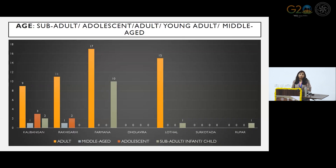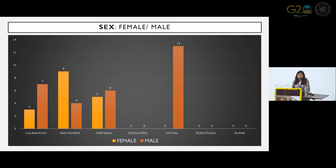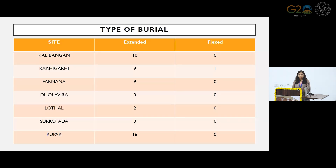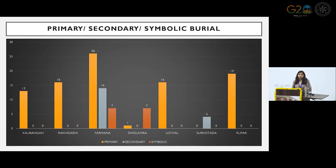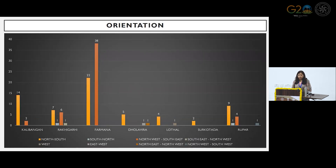The age criteria: most of the burials found are of adults. Looking at male and female variety, in maximum cases male burials have been found, but in Rakhigadi female burials are in the majority out of the excavated burials. Type of burials: mostly the extended varieties are found. In Rakhigadi, one example of a flexed burial is found. Mostly primary burials are found from excavations. Orientation: most of the orientation variety is north-south and northwest, so again this identification marker of alignment towards north-northwest comes out from this study.